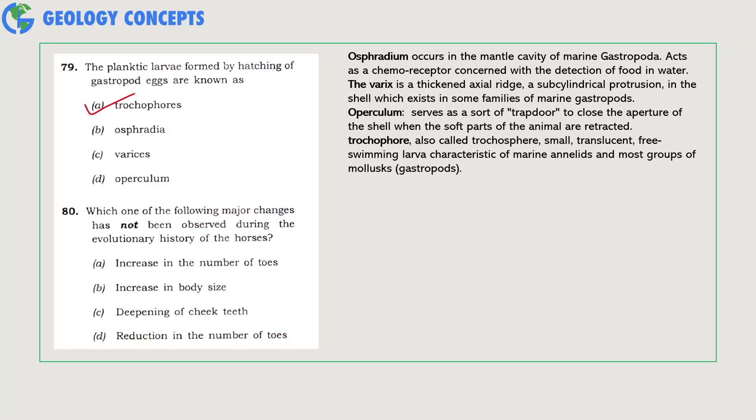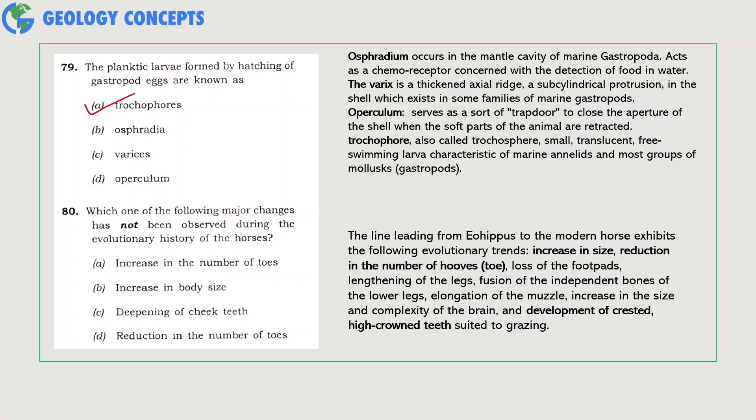Which one of the following major changes has not been observed during the evolutionary history of horses? The line leading from Eohippus to the modern horse exhibits certain distinct evolutionary trends like increase in size, reduction in the number of hooves or toes, loss of the foot pads, lengthening of the legs, fusion of the independent bones of the lower legs, elongation of the muzzle, increase in the size and complexity of the brain, and development of crested high-crown teeth suited to grazing. Increase in number of toes is incorrect. Hence, option A is the right answer as per the question.